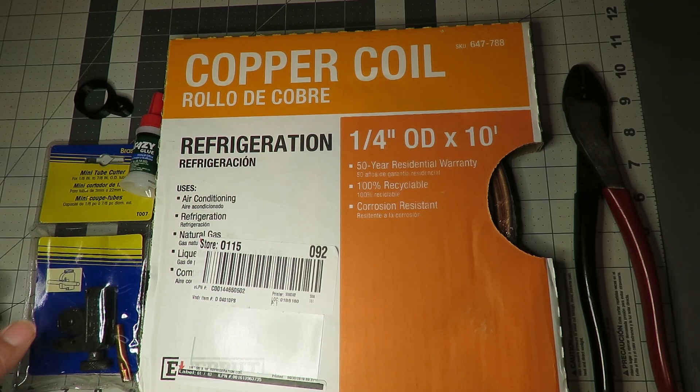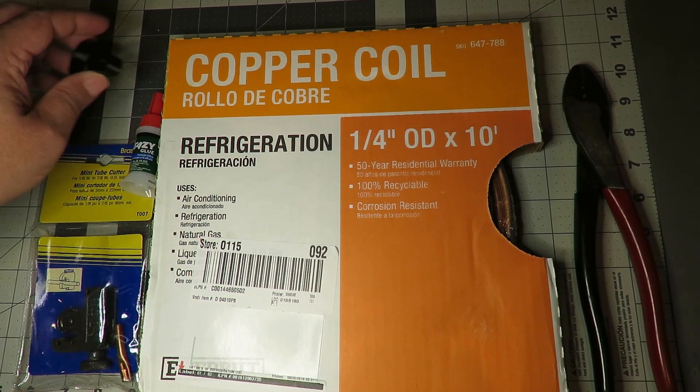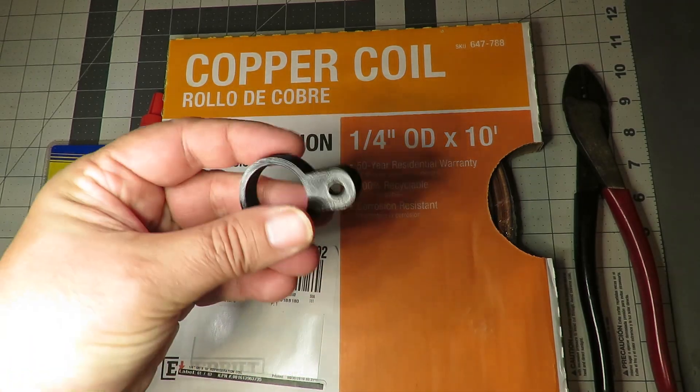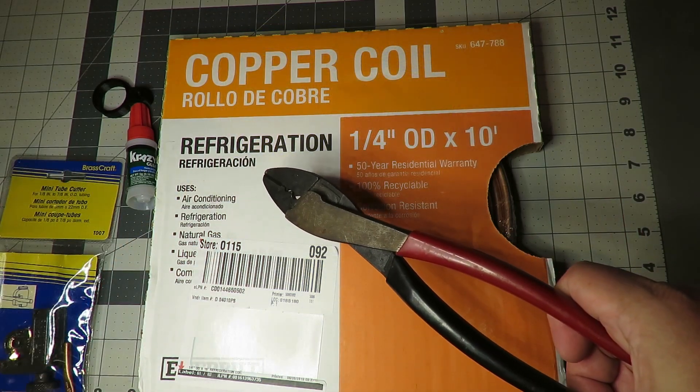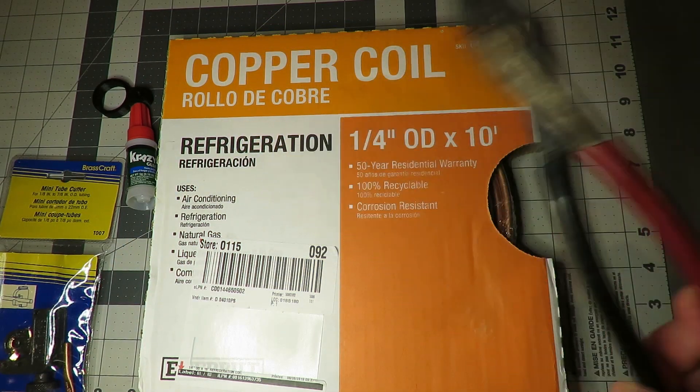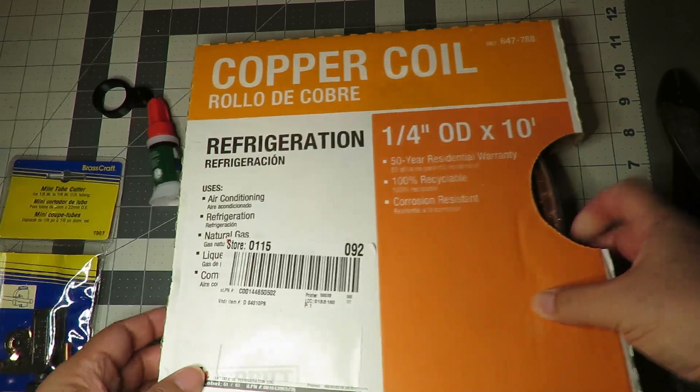For this construction, you'll need to 3D print the mounting assembly, and I'll leave a link to the STL file in the description. You will also require a tubing cutter, a pair of pliers or crimpers, and some quarter inch outer diameter copper tubing from Home Depot.